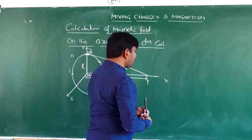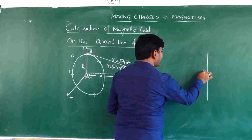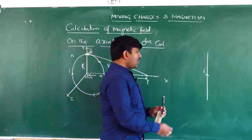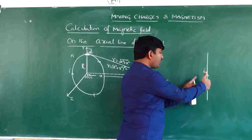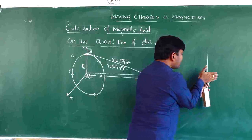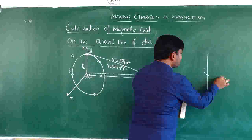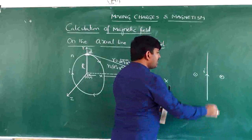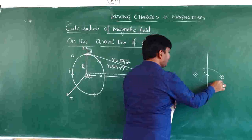Let me choose a straight current-carrying conductor carrying a current of I amperes. If I hold it such that the thumb points in the direction of current, then these fingers encircling the conductor give the direction of the magnetic field. Here, the direction is into the board on one side, and out of the board on the other side. The magnetic field lines follow circular paths.